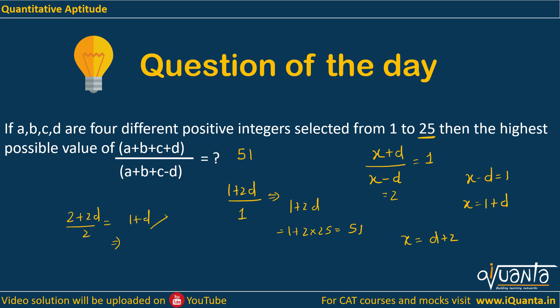If you want to maximize 1+d, you will have to put d=25, which will give us 26. So if you keep increasing the value of denominator, the value of the fraction will keep decreasing. So 51 will be the maximum value.